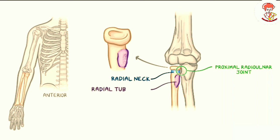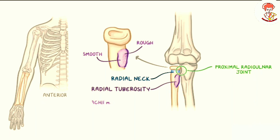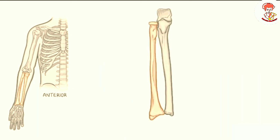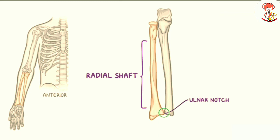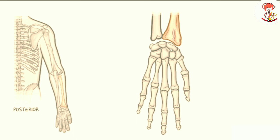Immediately below the radial head there is the narrow radial neck, and distal to it on the medial side there is an oval-shaped bony protuberance called the radial tuberosity. The radial tuberosity has two parts: the posterior part which is rough, and the anterior part which is smooth. The posterior part is where the tendon of the biceps brachii muscle inserts. Distal to the radial tuberosity there is the radial shaft, which becomes broader distally and bends slightly toward the medial side. On its medial side there is the ulnar notch, where part of the ulnar head fits to form the distal radioulnar joint. On its posterior side, the distal radius has a bony prominence called Lister's tubercle, or dorsal tubercle of the radius, which can be palpated on the dorsum of the wrist.